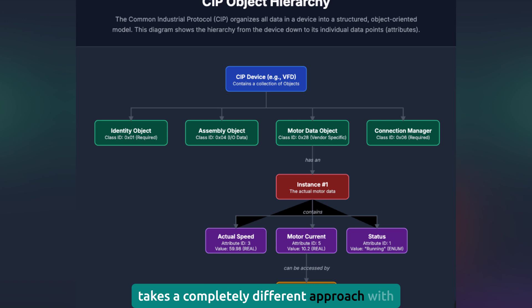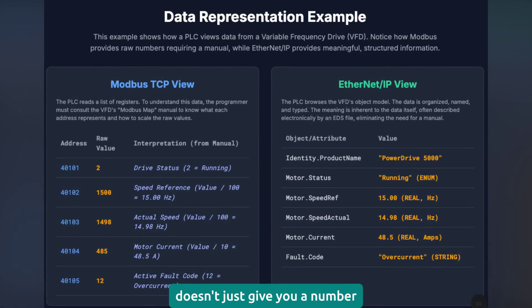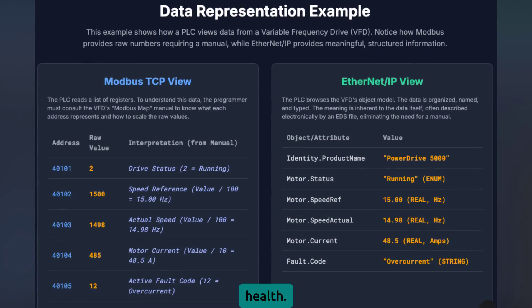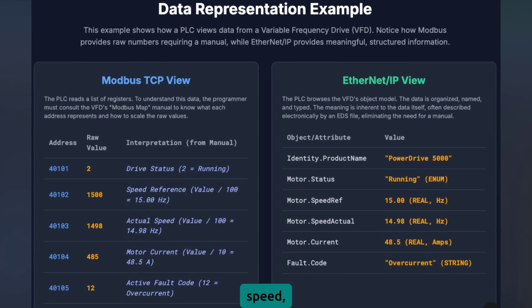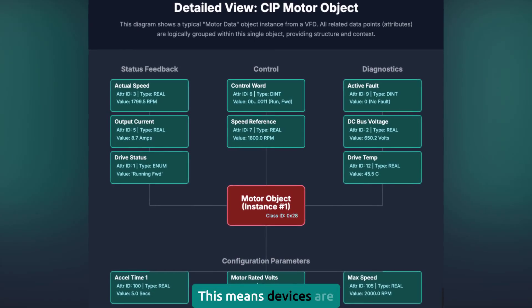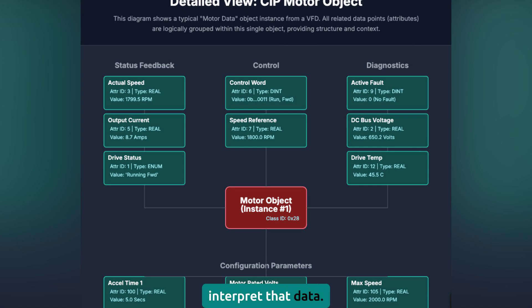EtherNet/IP takes a completely different approach with the Common Industrial Protocol Object Model. Instead of generic registers, it organizes data into objects that represent real-world things. An analog input object doesn't just give you a number — it gives you the engineering units, scaling information, alarm limits, and diagnostic information about sensor health. A motor object includes speed, torque, current, fault status, and operating hours, all organized together. This means devices are self-describing. When you connect a new EtherNet/IP device, your system can automatically discover what it is, what data it provides, and how to interpret that data. No more guessing what register 41157 means — the device tells you its inlet pressure in PSI with a range of 0 to 300.